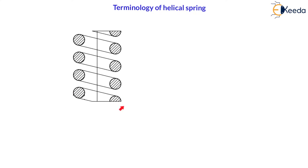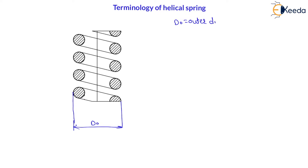The extreme diameter of these wires is called outer diameter — it is called the outer diameter of the spring. Here, the extreme diameter is called outer diameter of spring. This diameter we can say dO, where dO is nothing but the outer diameter of spring.